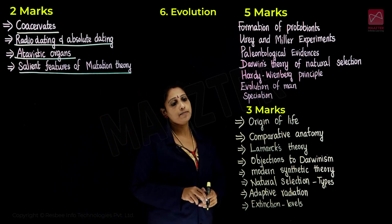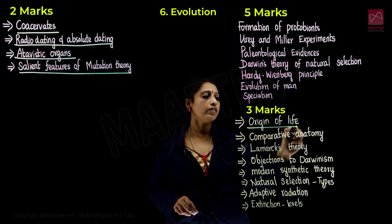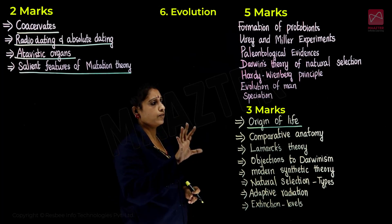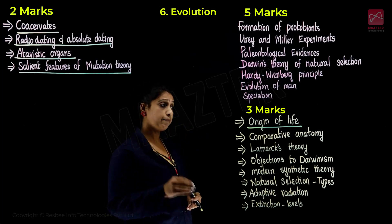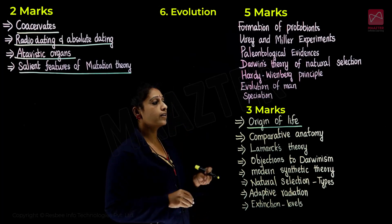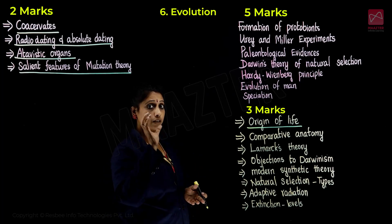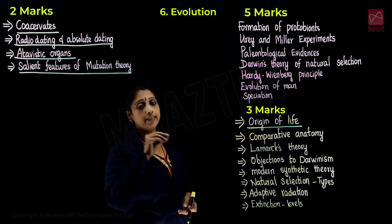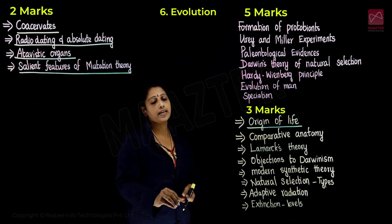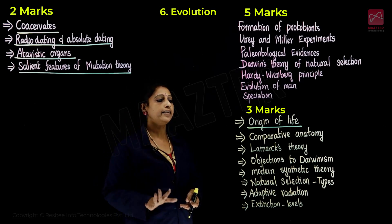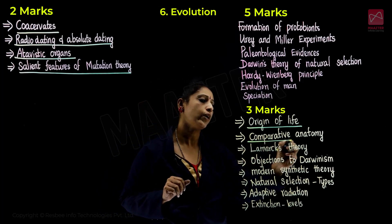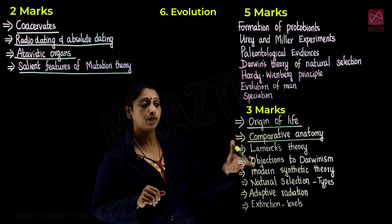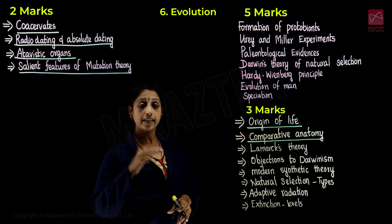There are three more questions on the origin of life. Theories include the theory of spontaneous generation, the Big Bang theory, theory of biogenesis, and the theory of chemical evolution — with chemical evolution being the most important. You can compare these two important theories. Also, comparative anatomy — homologous structures and analogous structures — compare and explain.